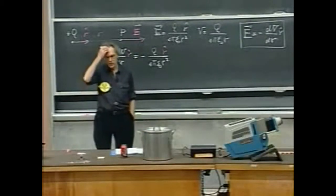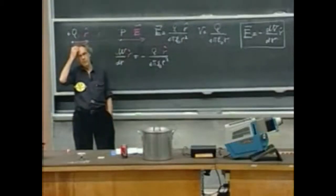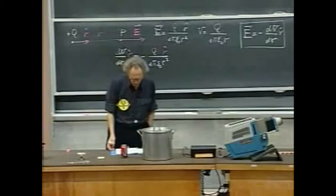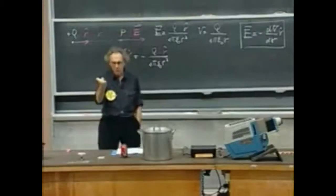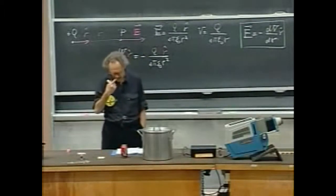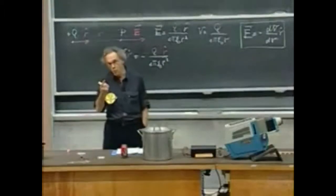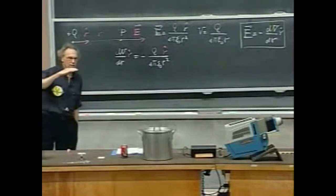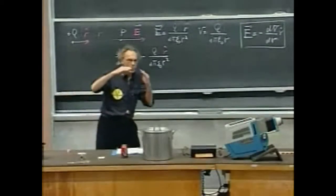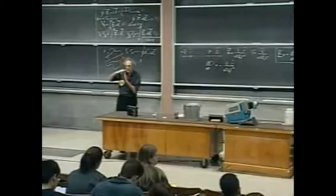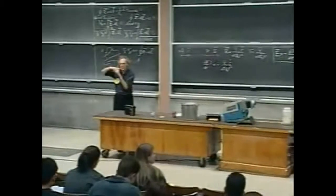I mentioned last time that electric field lines are always perpendicular to the equipotential surfaces. And that's obvious why that has to be the case. Imagine that you are in space and that you move with a charge in your pocket perpendicular to electric field lines. So you purposely move only perpendicular to the electric field lines. That means that the force on you and the direction in which you move are always at 90-degree angles, so you only move perpendicular to the field lines.